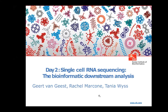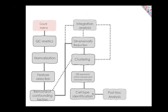Today is day two. As a recap: yesterday we saw how to go from FASTQ files to a count matrix, understood QC metrics to remove dying cells or doublets, discussed normalizations, feature selection, and how to remove confounding factors with regress-out and data scaling.